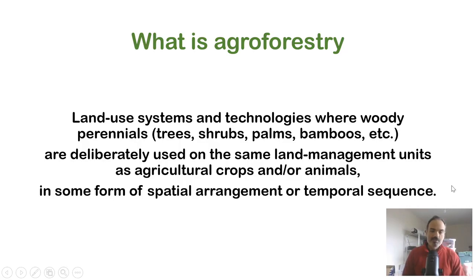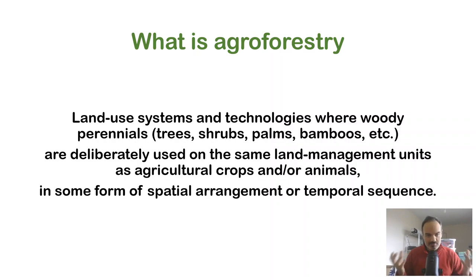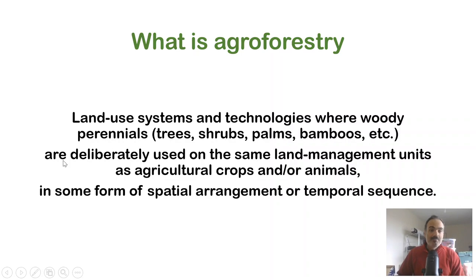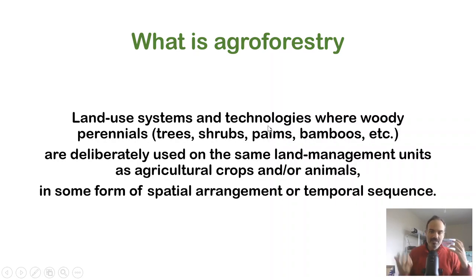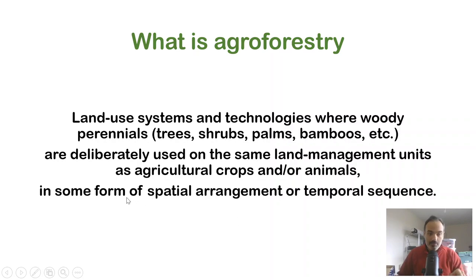What is agroforestry? This is one of my favorite definitions because it's very comprehensive. It's a collective name for land-use systems and technologies which include woody perennials — trees, shrubs, palms, bamboos, and other woody plants — which are deliberately used on the same land management units as agricultural or horticultural crops, and also animals, in some form of spatial and temporal sequence. So you have a diversity of herbaceous and woody plants managed deliberately on the same land, potentially with animals as well.